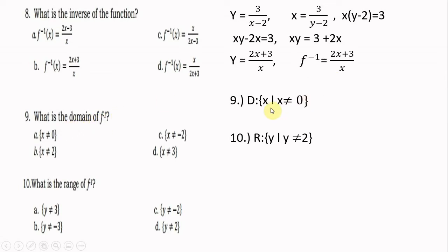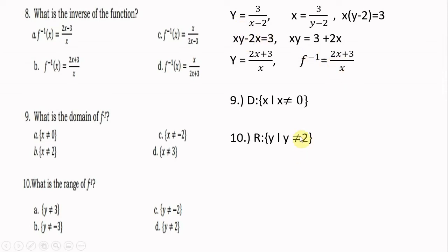Number nine: what is the domain of the inverse? The domain of the inverse is x should not be equal to 0. The range should not be equal to 2, because the horizontal asymptote of (2x + 3)/x is 2 — the numerator and denominator have the same degree, so 2 divided by 1 equals 2. Also, the domain of the original is the range of the inverse, and the range of the original is the domain of the inverse. Since the domain of the original was x ≠ 2, the range of the inverse is y ≠ 2. They are the same.